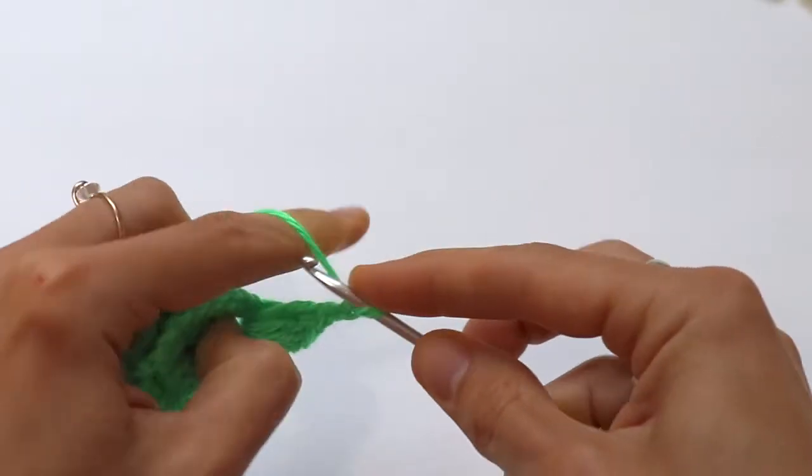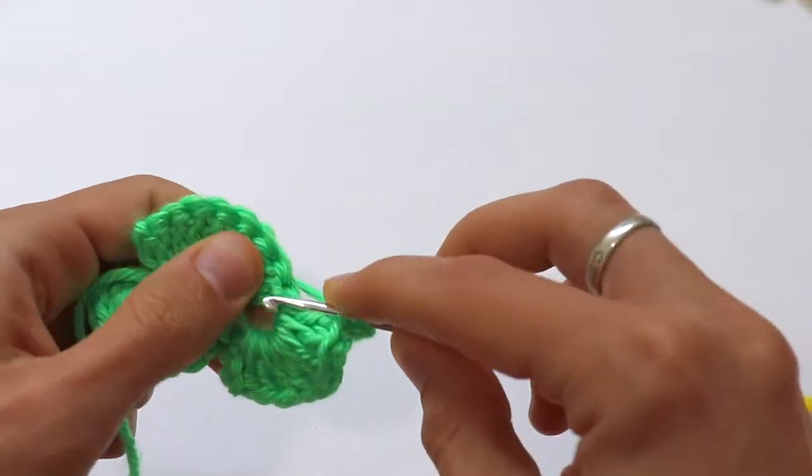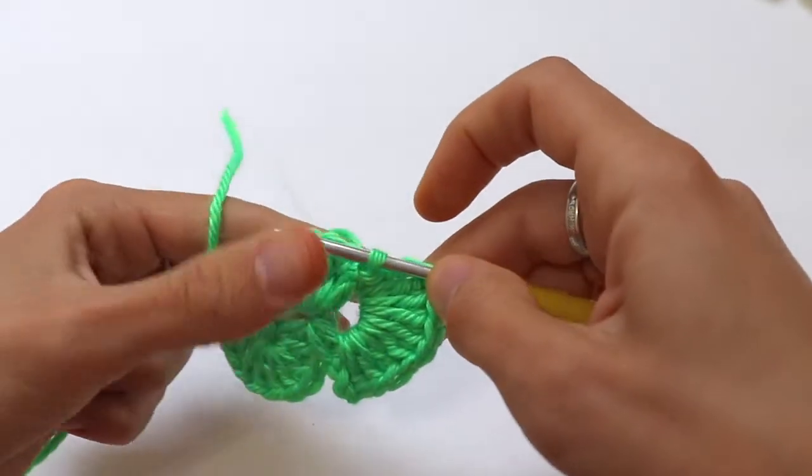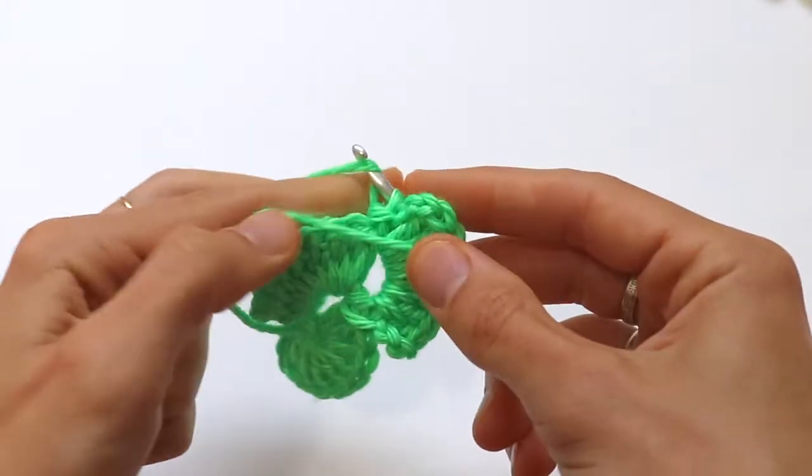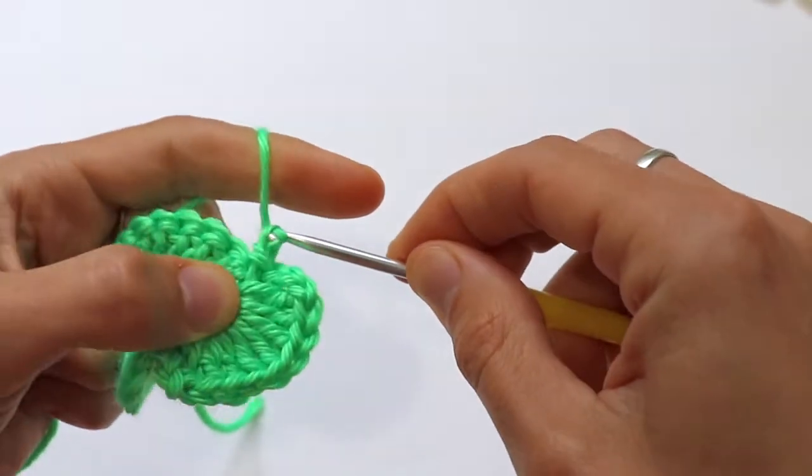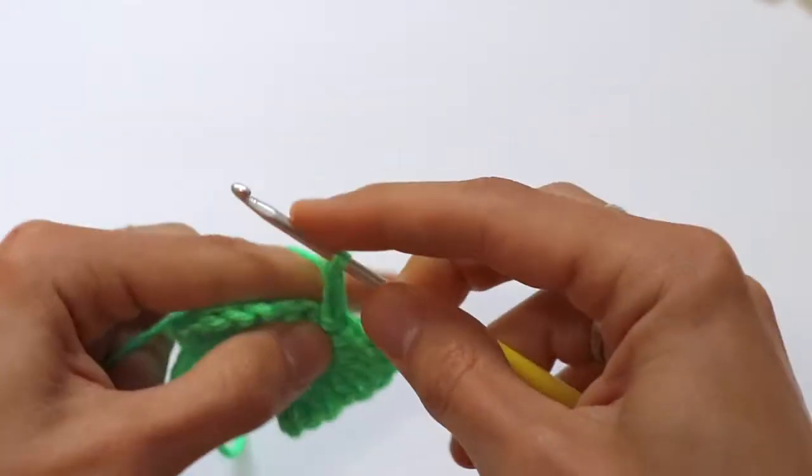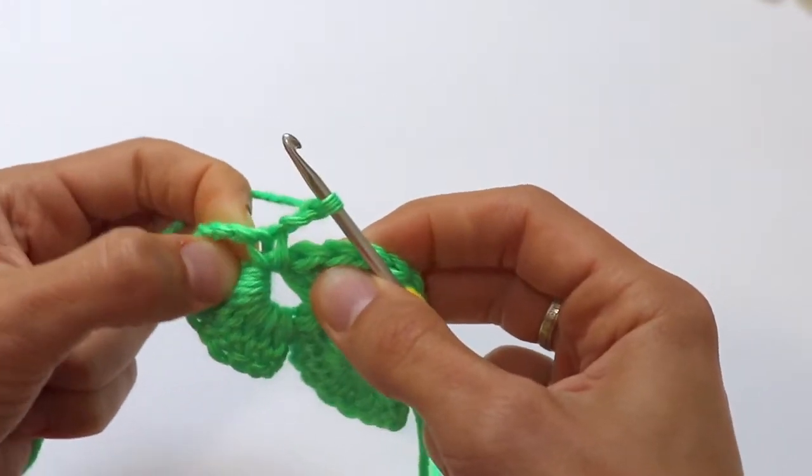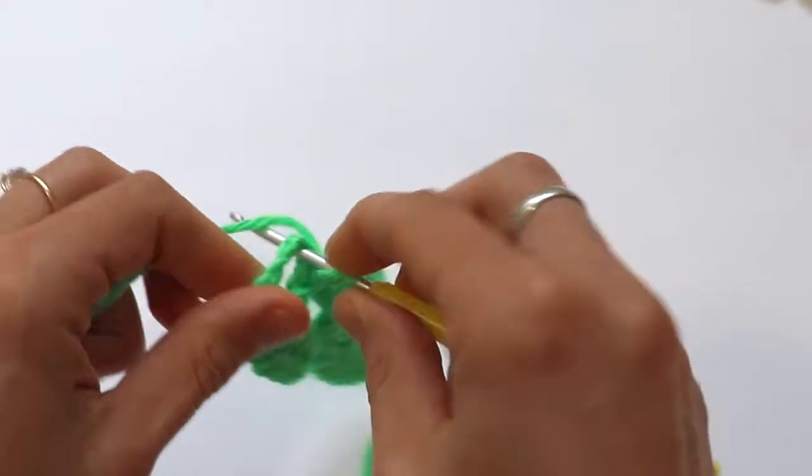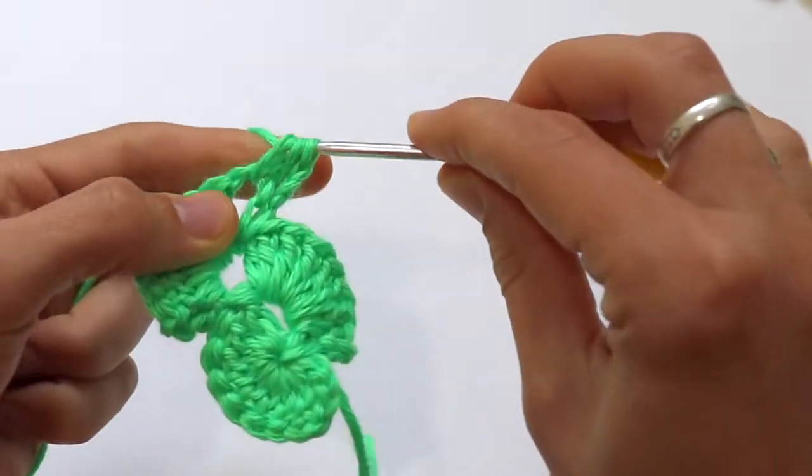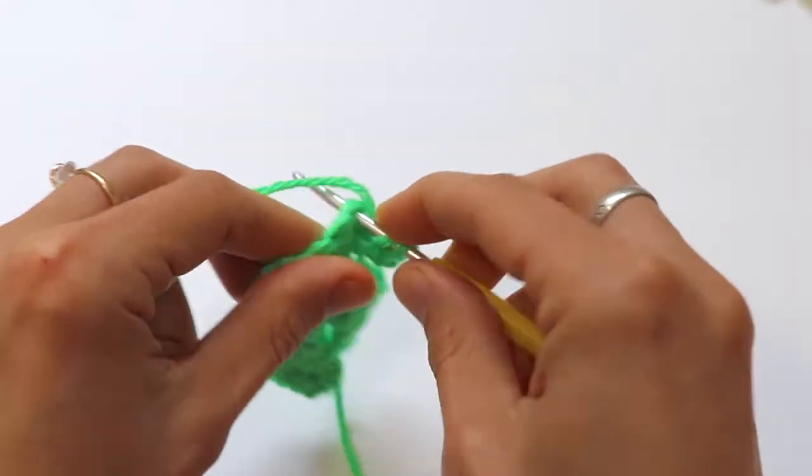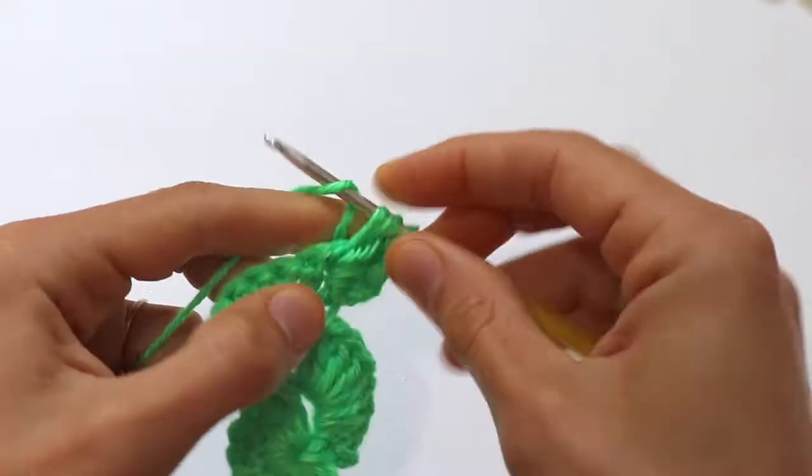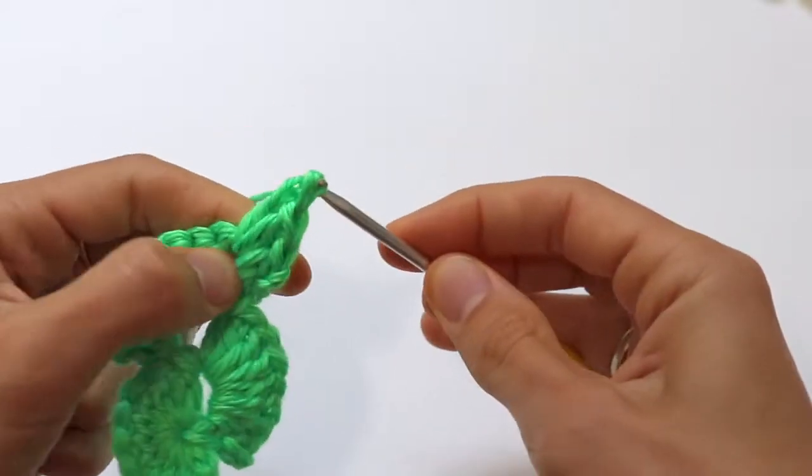Chain three and join into the chain three space. It looks like this now. Chain three, flip it over, find again the chain three space, and make eight double crochet into this chain three space.